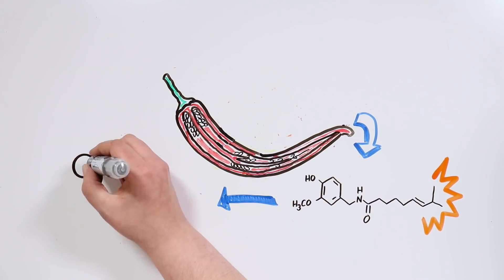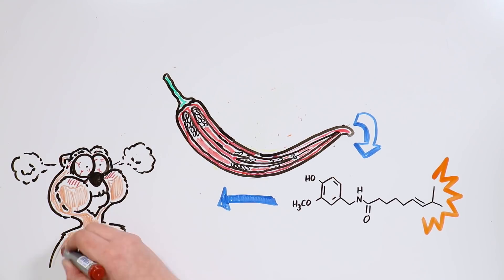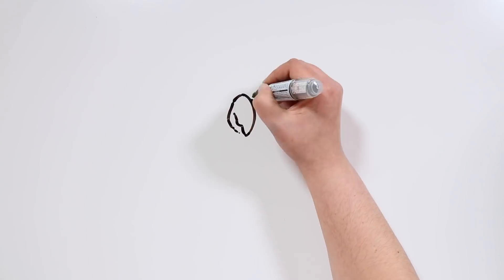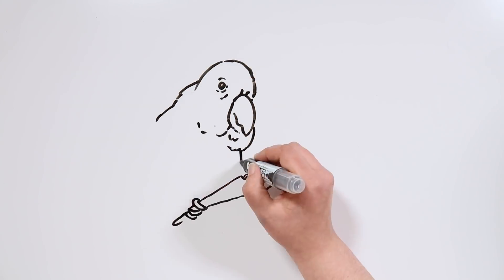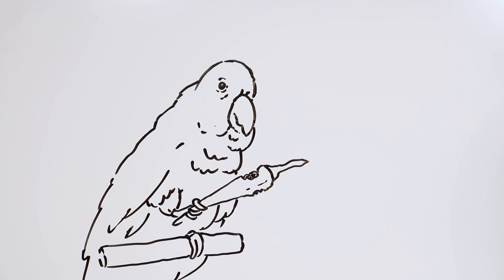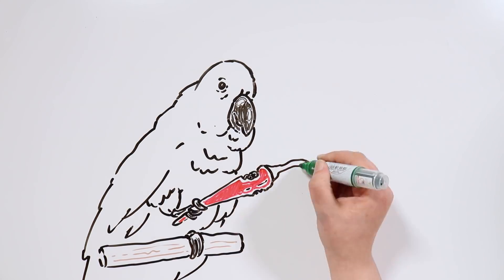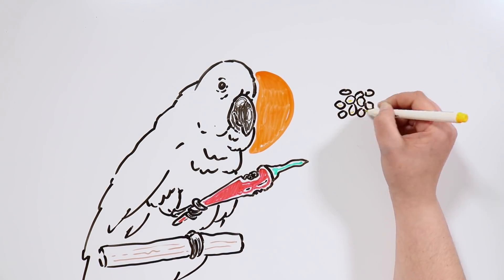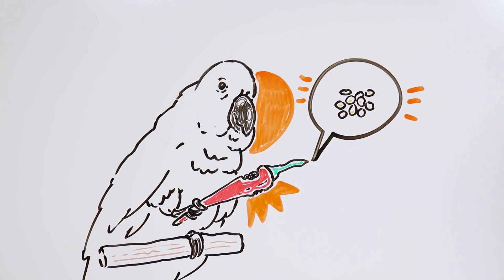Chili peppers produce this substance to defend themselves from mammals, and avoid being eaten by them. Birds don't perceive the spiciness, so when they eat chili peppers the seeds go undigested through their intestinal tract, and thus the birds end up spreading the seeds, helping propagate the plant.